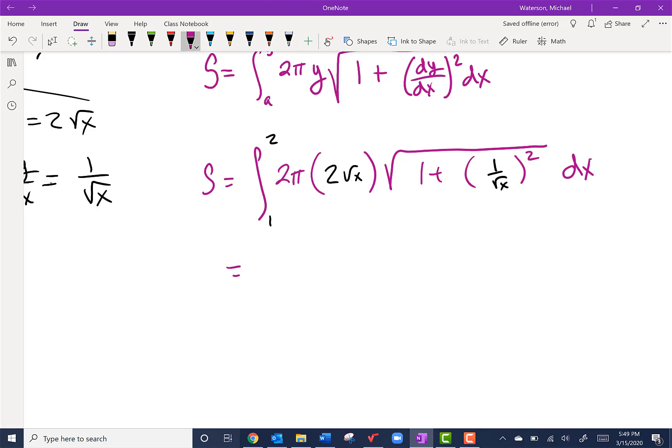Let's put the 2 and the 2 together, yank the π out to the front and leave us with 4π. Integral from 1 to 2 of √x times the square root of 1 plus—and 1/√x squared, that's just 1/x—dx.